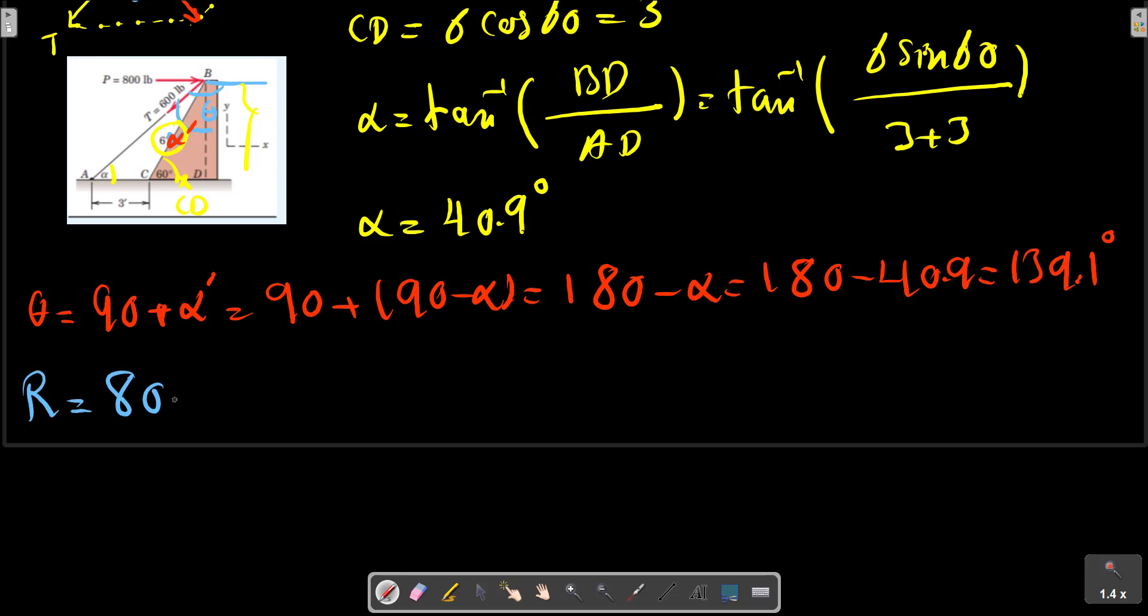R² = P² + T² + 2PT cos 139.1, and if we calculate this expression, R can be calculated. It is 525 lb.